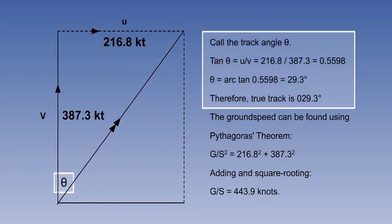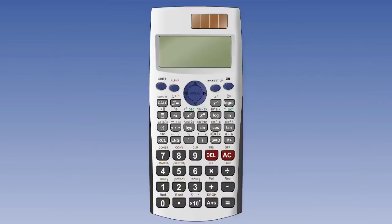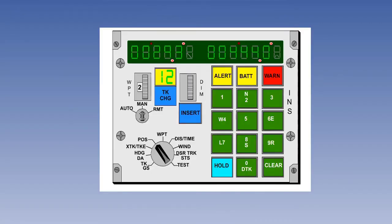The problem is solved using elementary trigonometry, finding the track from the tangent, which is given by U over V, and finding the ground speed by Pythagoras. This sort of fairly simple calculation can be performed using only calculator-level technology. There is no complex computing involved. Typically, this would be carried out several times a second and continuously refreshed on the display. In this example, we have a true track of 029.3 and a ground speed of 444 knots.